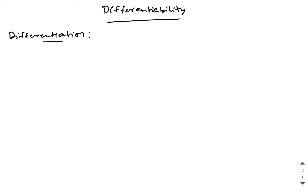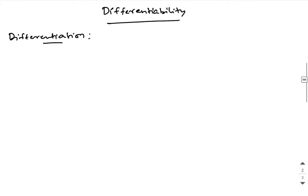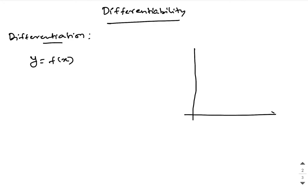Last year you would have learnt that differentiation means dy by dx. The question is: why do we differentiate? By differentiating a particular function, what is the output that we are getting at a particular point? Now let us consider a function y is equal to f of x. When I take a graphical representation of y equals f of x, let us say there is a function like this existing.